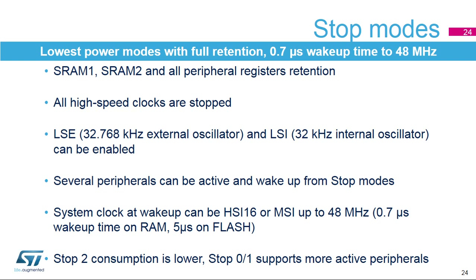STM32L4 devices feature three stop modes — stop 0, 1, and 2 — which are the lowest power modes with full retention and only a 0.7 microsecond wake-up time to run mode at 48 MHz. The contents of SRAM 1, SRAM 2, and all peripheral registers are preserved in stop modes. All high-speed clocks are stopped. The 32.768 kHz external oscillator and 32 kHz internal oscillator can be enabled. Several peripherals can be active and wake up from stop mode. Stop 2 consumption is lower than stop 1, but stops 0 and 1 support more active peripherals.